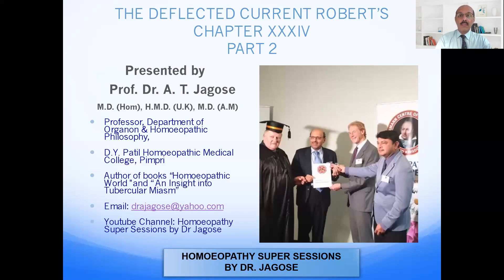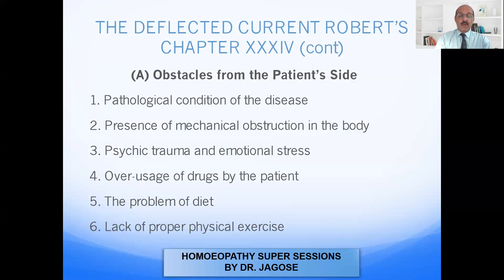Welcome to Homeopathy Super Sessions by Dr. Jagos. Today we'll see Robert Chapter 34, the second part of the Deflective Current. We'll discuss the first part today: what are the obstacles from the patient's side. There are six obstacles: number one, pathological condition of the disease; second, presence of mechanical obstructions in the body; third, psychic trauma and emotional stress; fourth, over usage of drugs by the patient; fifth, the problem of diet; and sixth, the lack of proper physical exercise.